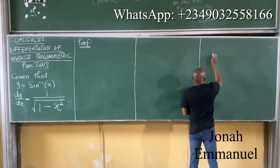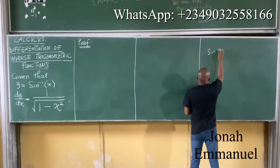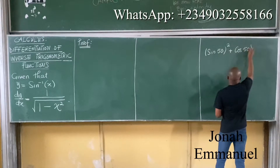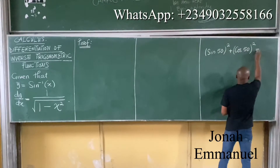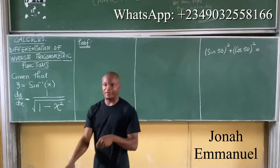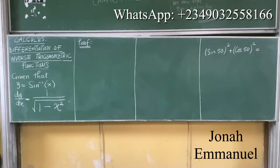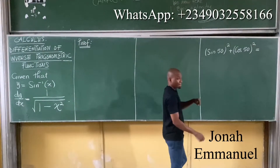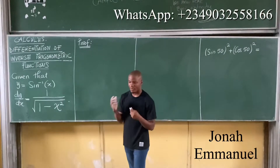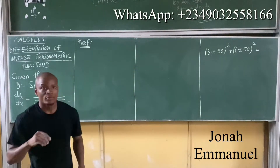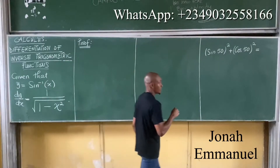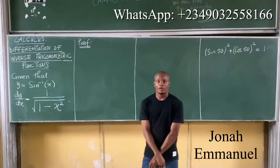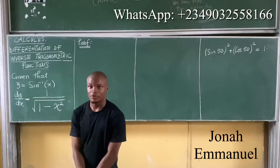For proof, consider sine(50)² plus cos(50)². Type sine 50, close it squared, plus cos 50, close it squared. What's the answer? You get 1.